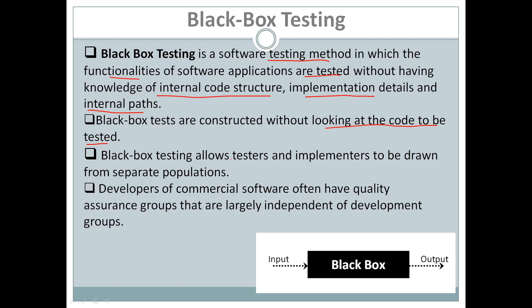Black box testing allows testers and implementers to be drawn from separate populations. In white box testing, the tester and implementer should be the same because the tester should have knowledge of the code. But in black box testing, the tester should not have knowledge of the internal code, and that is why the tester and implementer can be drawn from separate populations — both of them can be different.